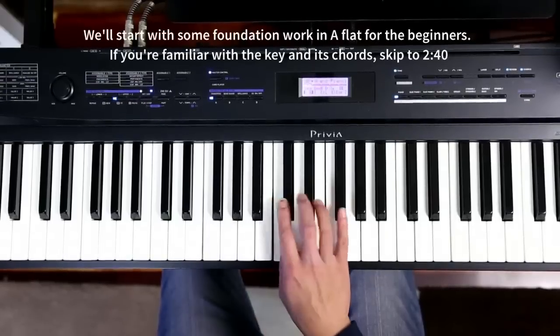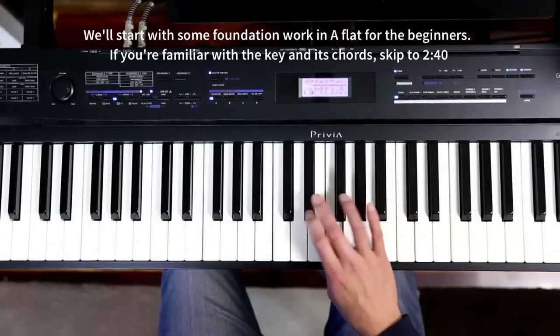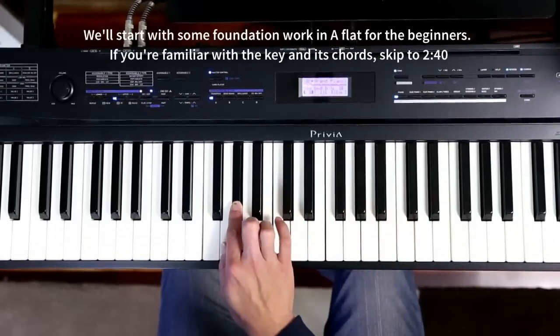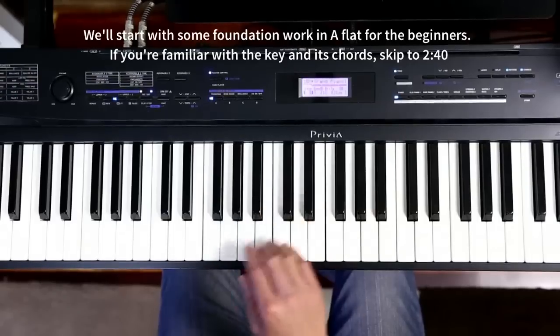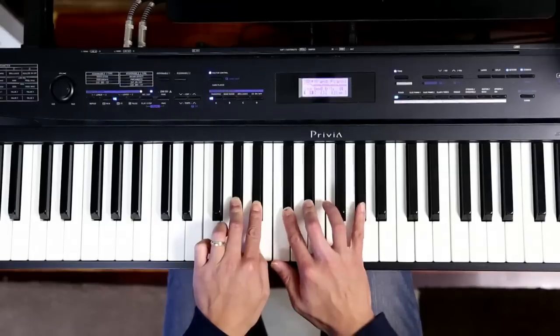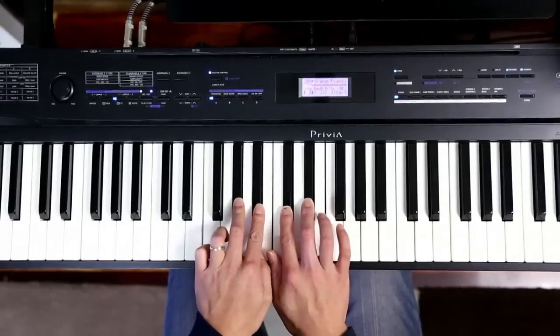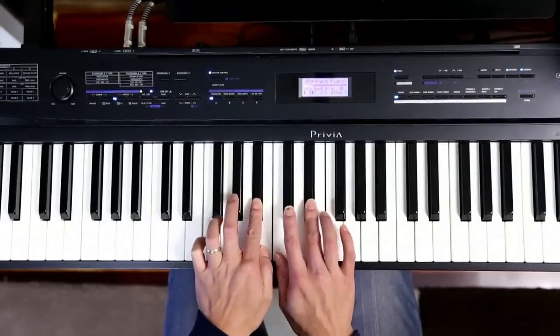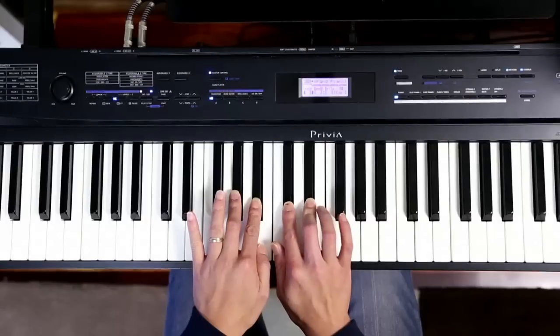To begin, let's start with the scale of A flat, so that our beginners can follow along. Now, that was the scale of A flat, and you'll notice that I played four black notes in there, with another A flat at the top. So we've got four black notes: B flat, E flat, A flat, and D flat.